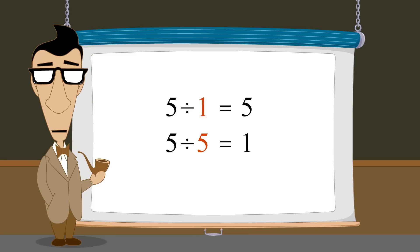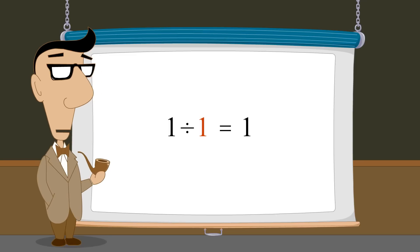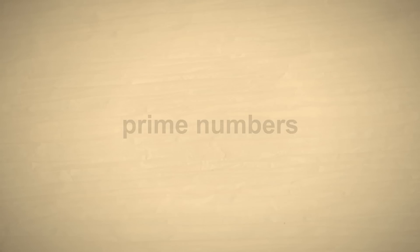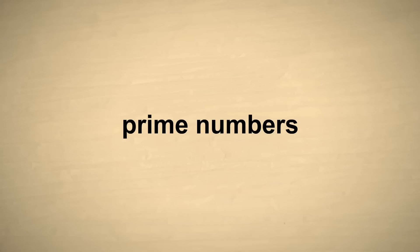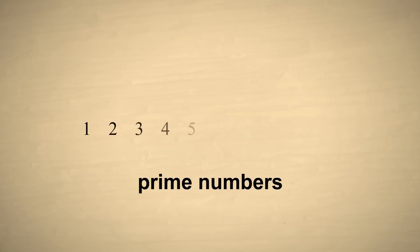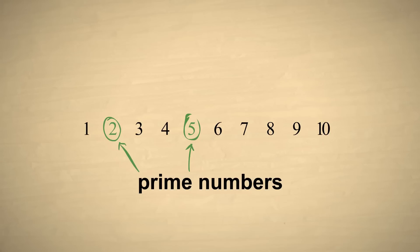On the other hand, five has only two factors: one and five. And one has only one factor, itself. Natural numbers that have exactly two factors — themselves and one — are called prime numbers. So which natural numbers are prime? Let's look at the first ten natural numbers. As we saw, five has exactly two natural divisors, so five is a prime number. The same thing goes for two, three, and seven. However, the number one has only a single divisor, itself, so one is not a prime number.